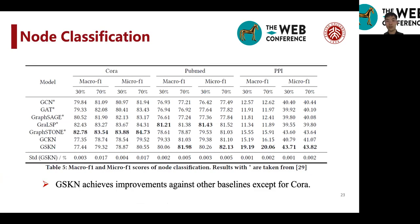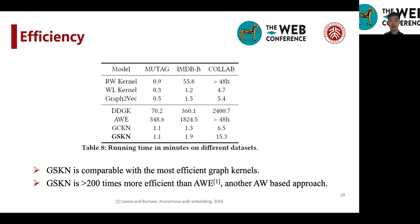And on node classification, GSKN outperforms baselines on PPI, where the structural information is very significant. And also, we can see that GSKN outperforms baselines on PubMed, but not on Cora.